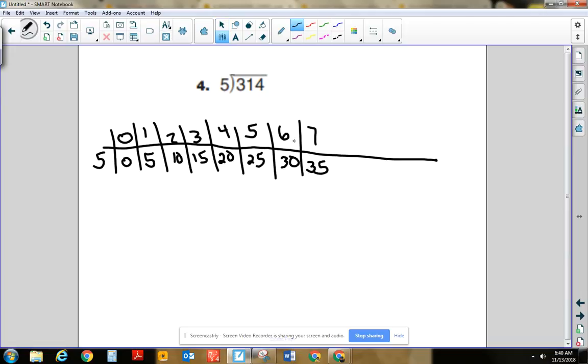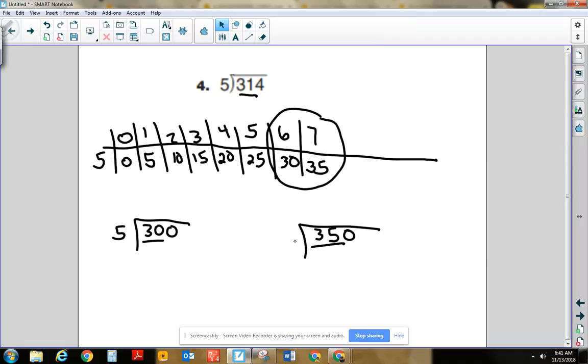And 31 tens is going to be in between here. So I can rewrite my division problems as 30 tens divided by 5 or 35 tens divided by 5. And I know that 6 tens here and then 7 tens here. Well, what's my better estimate? Well, 31 tens is definitely closer to 30 tens. So my better estimate is 60. About 60 fives is going to fit into 314.